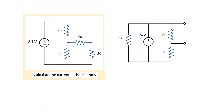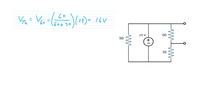Another resistor example: we want to calculate the current in the 40 ohms. The question determines the output, so I've redrawn the network with two open pins where the 40 ohms will connect later. You can verify all other interconnections are the same. For the Thevenin volts, notice the 24 volts is directly connected to the 50 ohms and also to the series combination of 60 and 30. The 50 ohms has no effect on the output, but the 24 volts across the 60 and 30 forms a voltage divider. The Thevenin volts is the voltage across the 60 ohms: 60 over the sum of 60 and 30, times 24 volts — giving 16 volts.